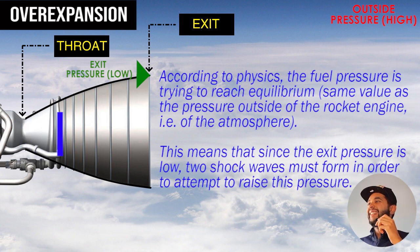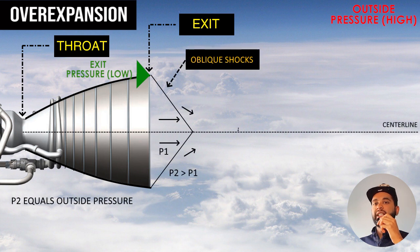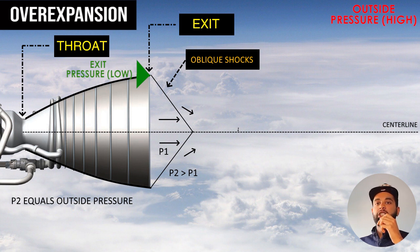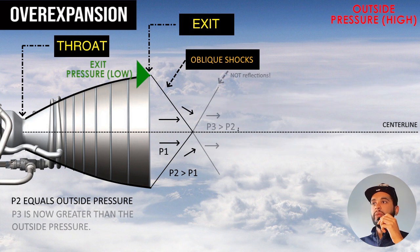The flow is actually trying to reach pressure equilibrium. So you will have two oblique shockwaves that form on each side of the nozzle exit. These increase the pressure — that's what shockwaves do — and they will make the pressure equal to the back pressure. But then the gas changes direction and cannot cross the centerline because that would violate the laws of thermodynamics. So two more oblique shocks form at the intersection point of the four shockwaves.